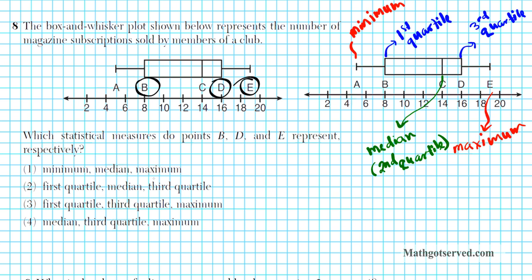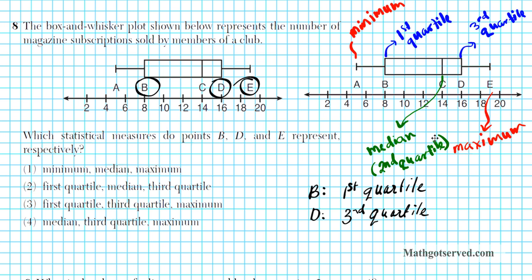In this problem, we are asked to find what B and E represent. B is our first quartile, and D would be our third quartile. E is our maximum. Looking at the answer choices — first quartile, median, and third quartile — our answer to number 8 is option number 2.